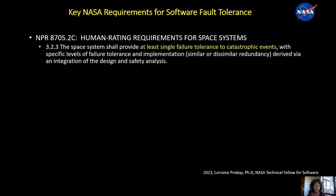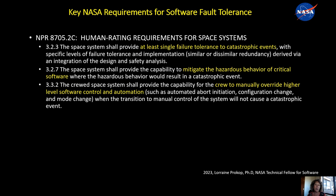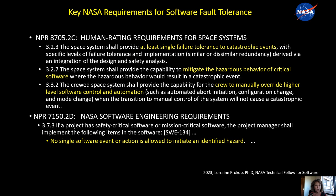The second requirement is to mitigate the hazardous behavior of critical software and have the crew ability to manually override automation. There's also a requirement in our software engineering requirement standard that no single software event should initiate a hazard. These things drive the need for consideration of what would happen if the software does something erroneously in critical situations, and lead to the necessity of some sort of backup system.